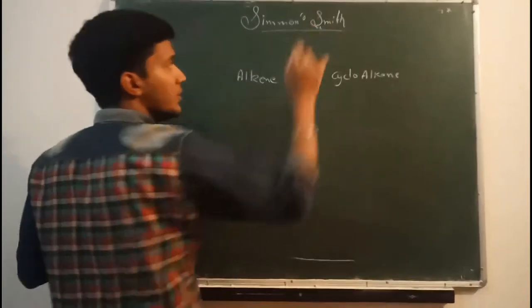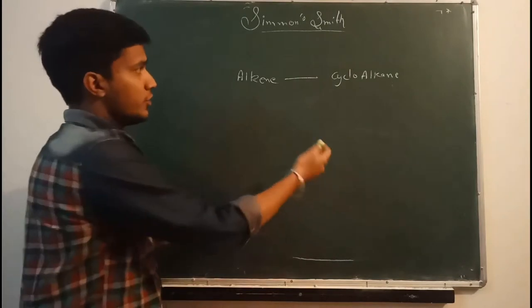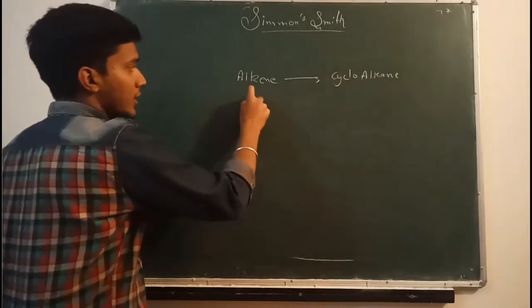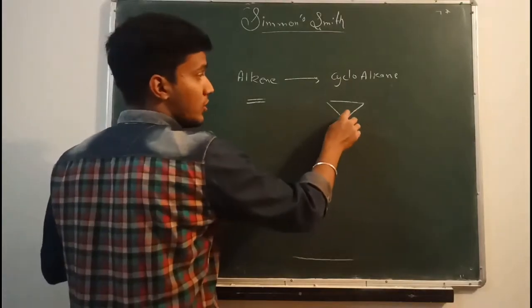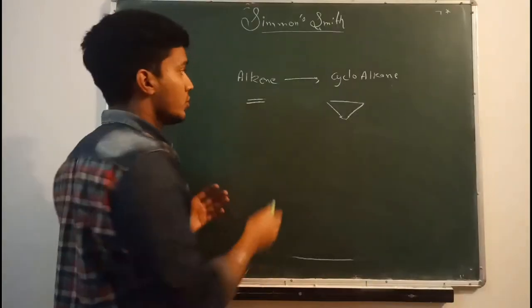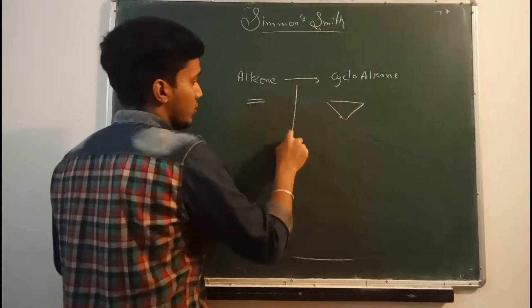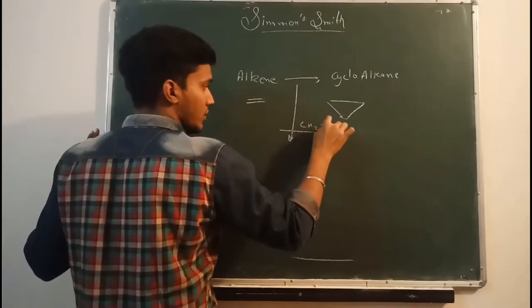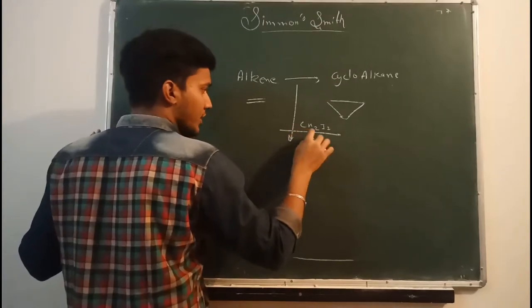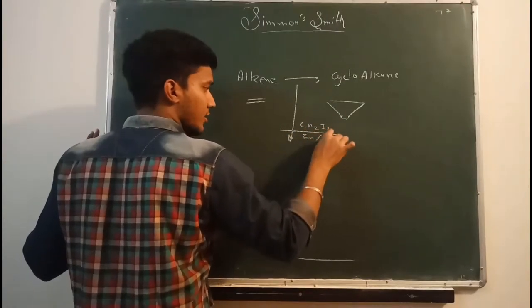We use this very good Simmons-Smith reaction. This alkene will convert into cycloalkane. Now we will talk about the catalyst used to convert this. The first catalyst we used in this reaction is CH2I2, diiodomethane, in the presence of zinc and copper.